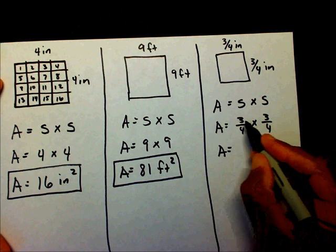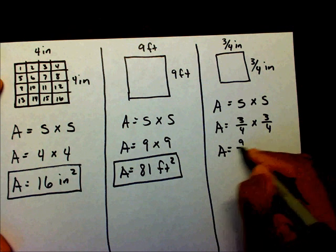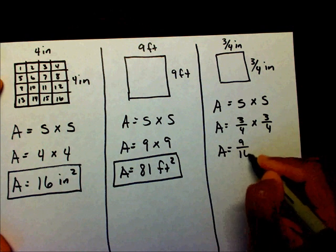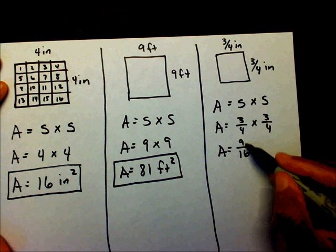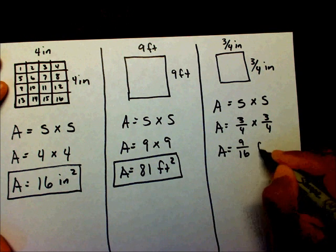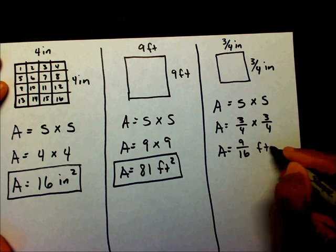So A equals three-fourths times three-fourths. So A equals three times three, which is nine, and four times four, which is sixteen. I don't think that can be reduced, so that's going to be nine-sixteenths feet squared.